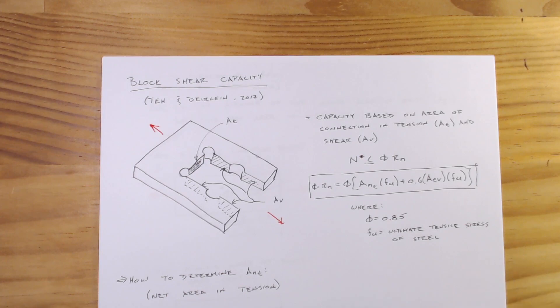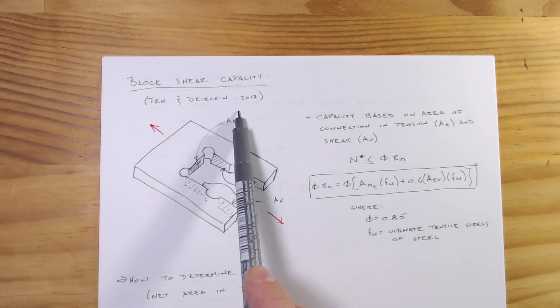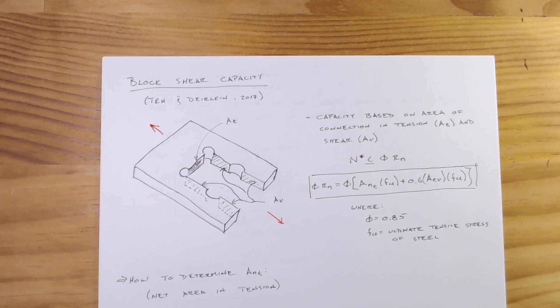One of the big things to note with block shear is it is a combination of shear and tension. So you have a portion of your connection which is rupturing in tension and a portion which is rupturing in shear. And so hence we have a tension area and we have a shear area and some capacity associated with both.